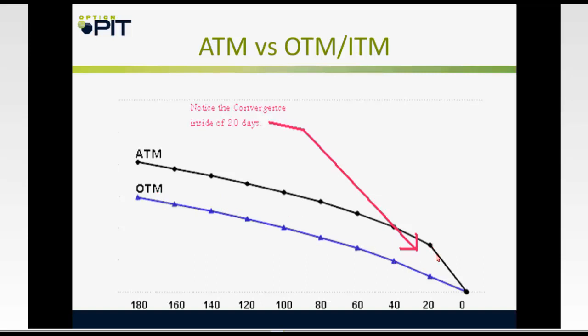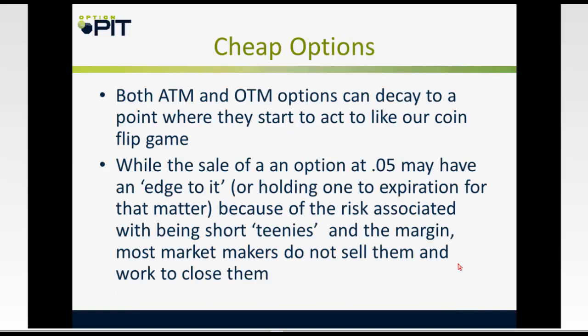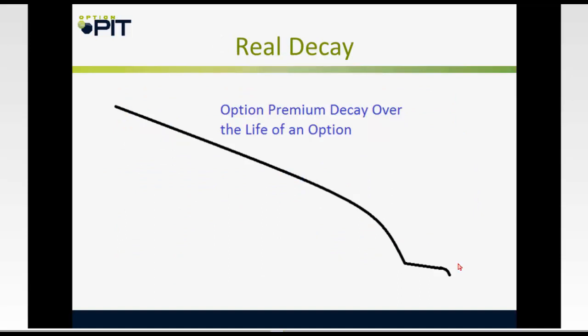At 20 days to expiration, there's a linear decay for the at-the-money option. But the out-of-the-money option is pretty flat at 20 days. At a certain point, options become very cheap and they actually stop decaying. This is what the real decay of the life of an out-of-the-money option looks like: it loses money, has a period of exponential decay, then that decay basically stops, and on the final day of expiration, it starts to decay again.